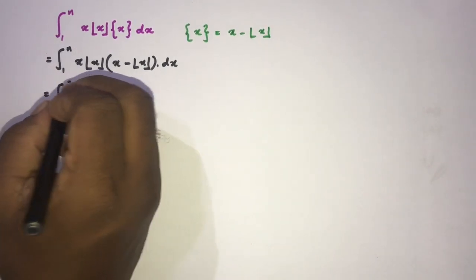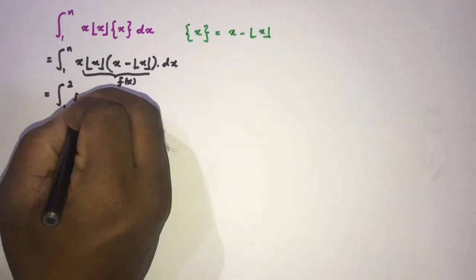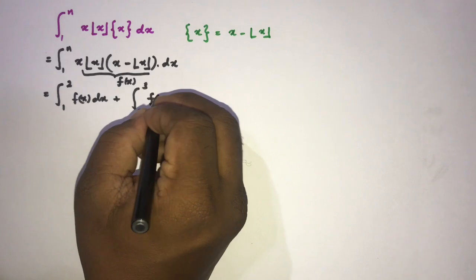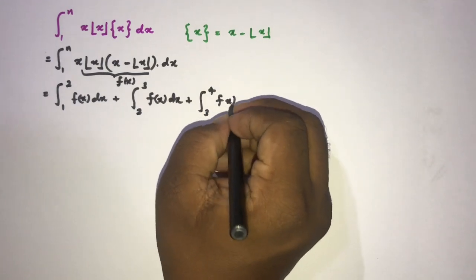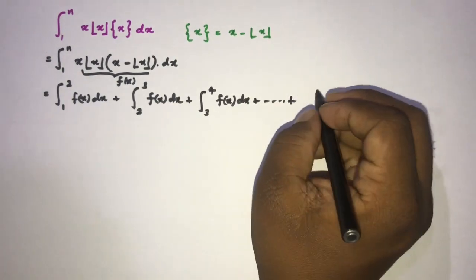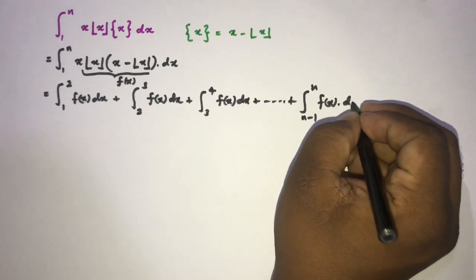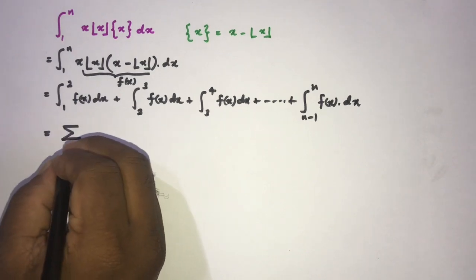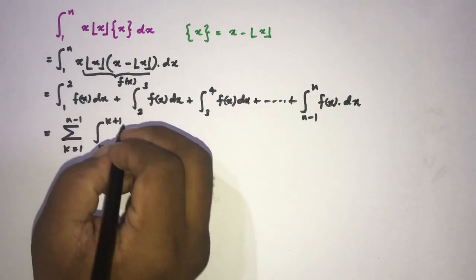Since we have the floor function, we can expand this integral over sub-intervals: from 1 to 2 of f(x) dx, plus 2 to 3 of f(x) dx, plus 3 to 4 of f(x) dx, and so on up to n-1 to n of f(x) dx. We can represent this series using sigma notation as the sum from k equals 1 to n minus 1 of the integral from k to k+1.